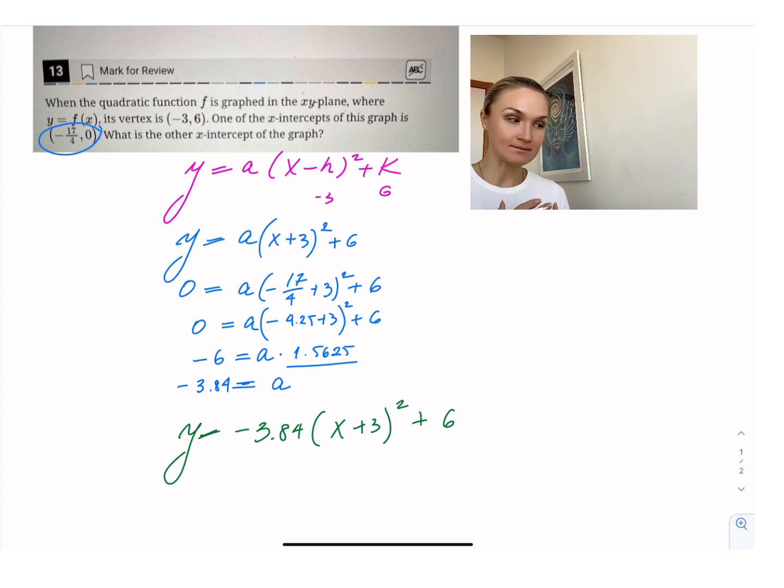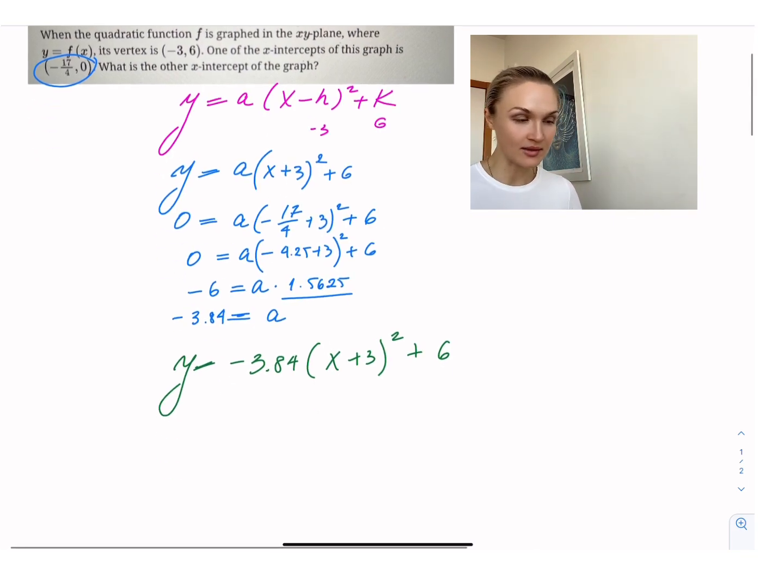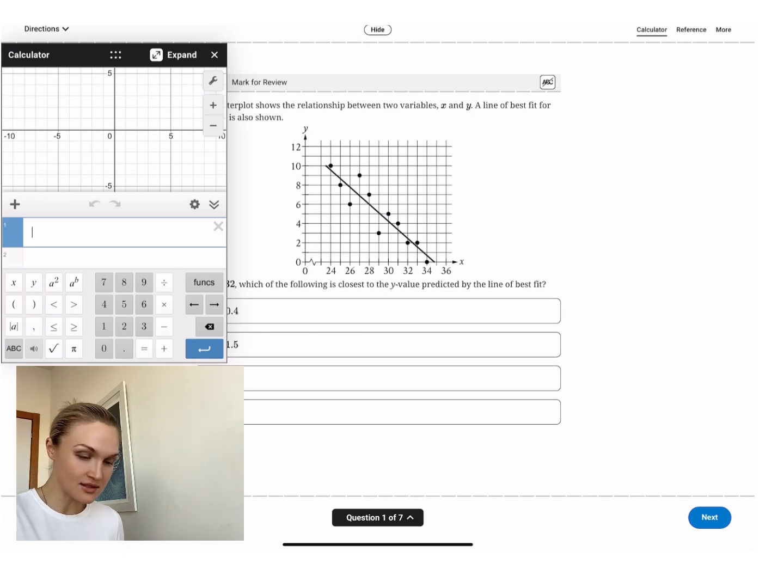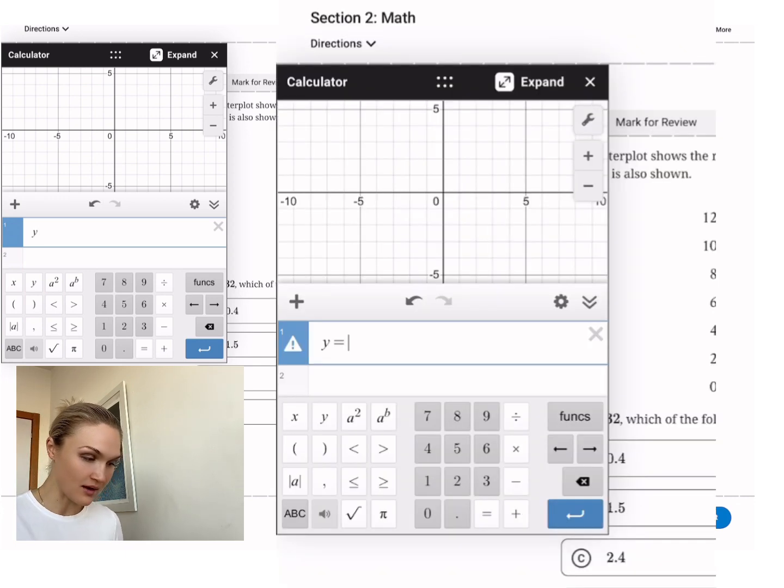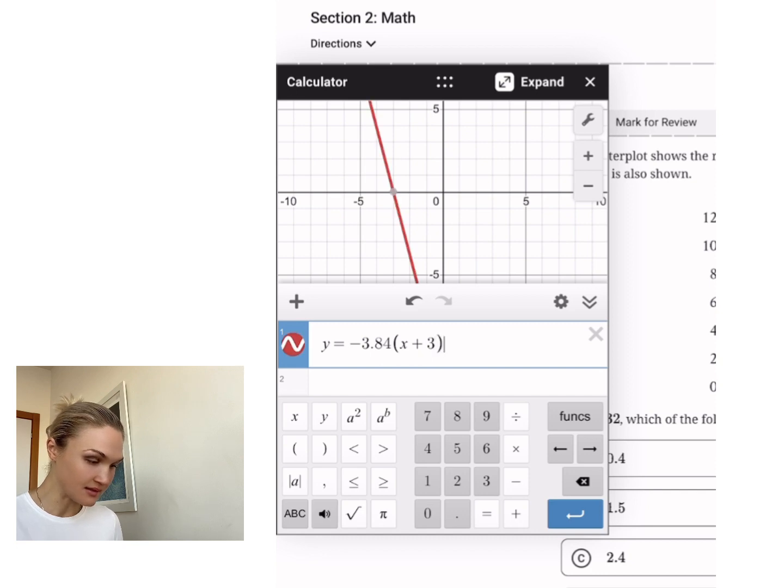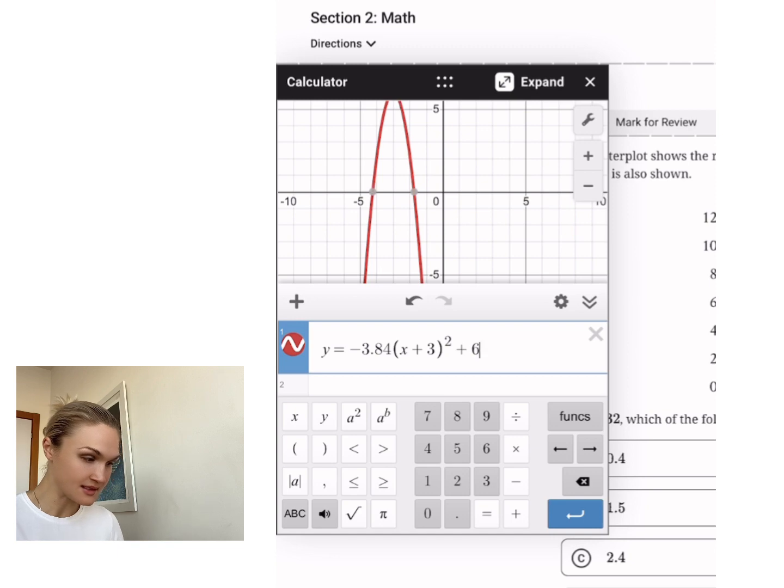And if you didn't want to use your calculator, by the way, you're going to probably be using the calculator that's inside of the program. So let's just graph it over here. Y equals negative 3.84 parentheses x plus three parentheses close squared plus six.